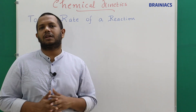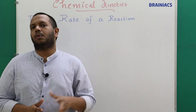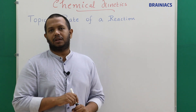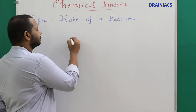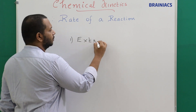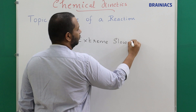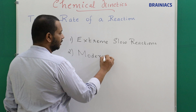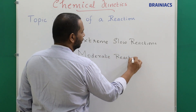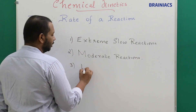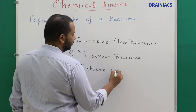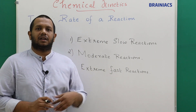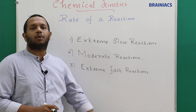An important question: is it possible to measure the rate of every chemical reaction? The answer is absolutely no. Chemical reactions are broadly classified into three categories — just a rough division: extreme slow reactions, moderate reactions, and extreme fast reactions.